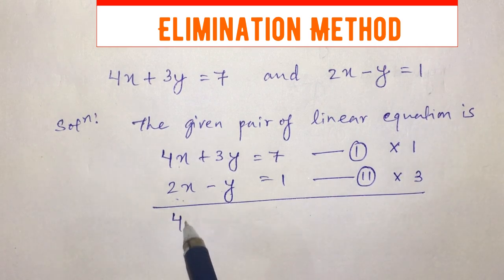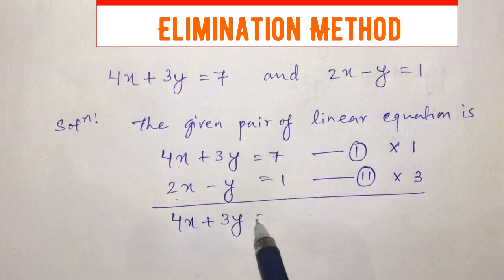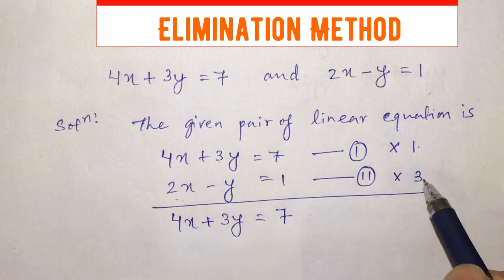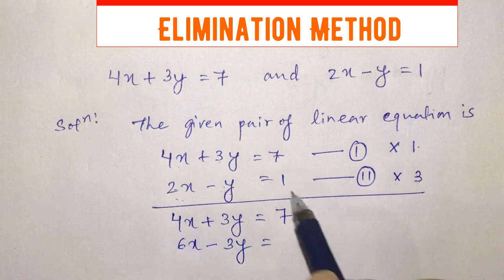1 into 4x plus 1 into 3y equals 1 into 7, which is 4x plus 3y equals 7 as it is. If I multiply equation number 2, 3 into 2x minus 3 into 1y equals 3 into 1, so 6x minus 3y equals 3.